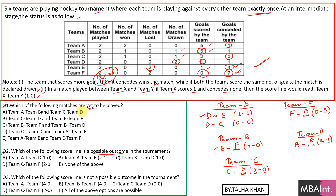Now answering question one — which of the following matches are yet to be played? Checking each option: the match between C and D has already been played, so that option is eliminated. B and D was also played, so that's gone. C and D again — already played. The only remaining correct option is that team A and team B, and team E and team F, have not yet played any match.